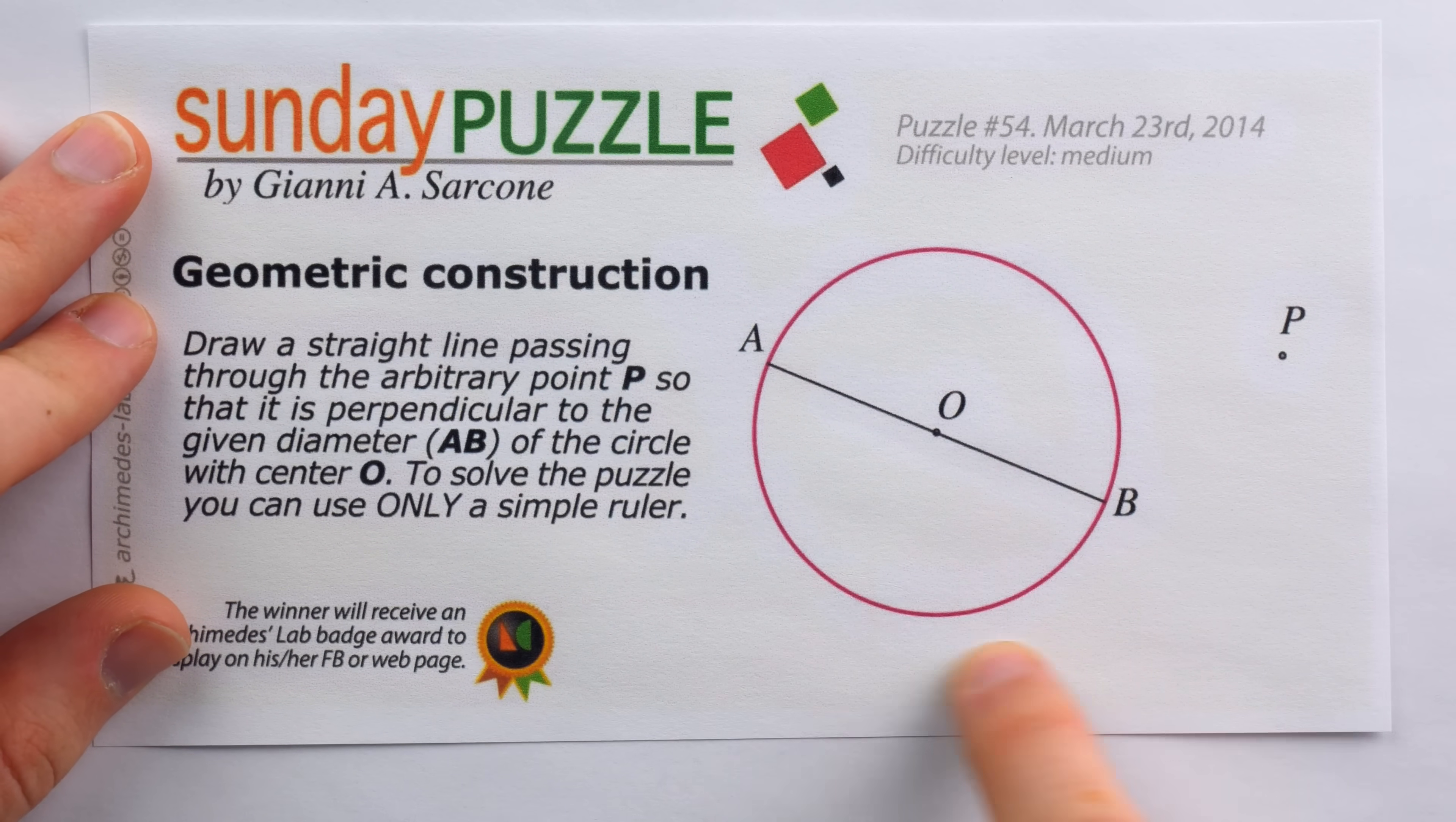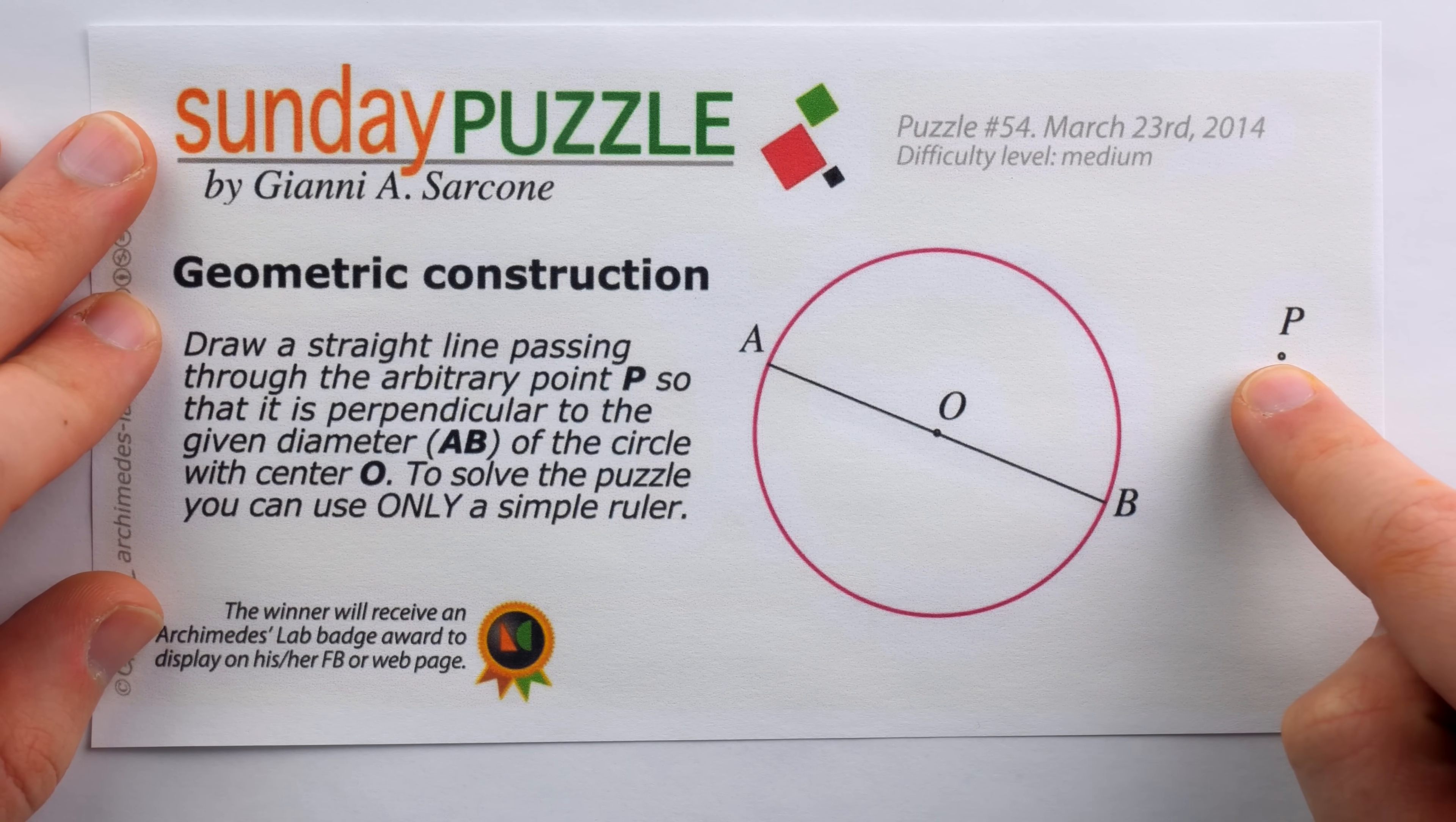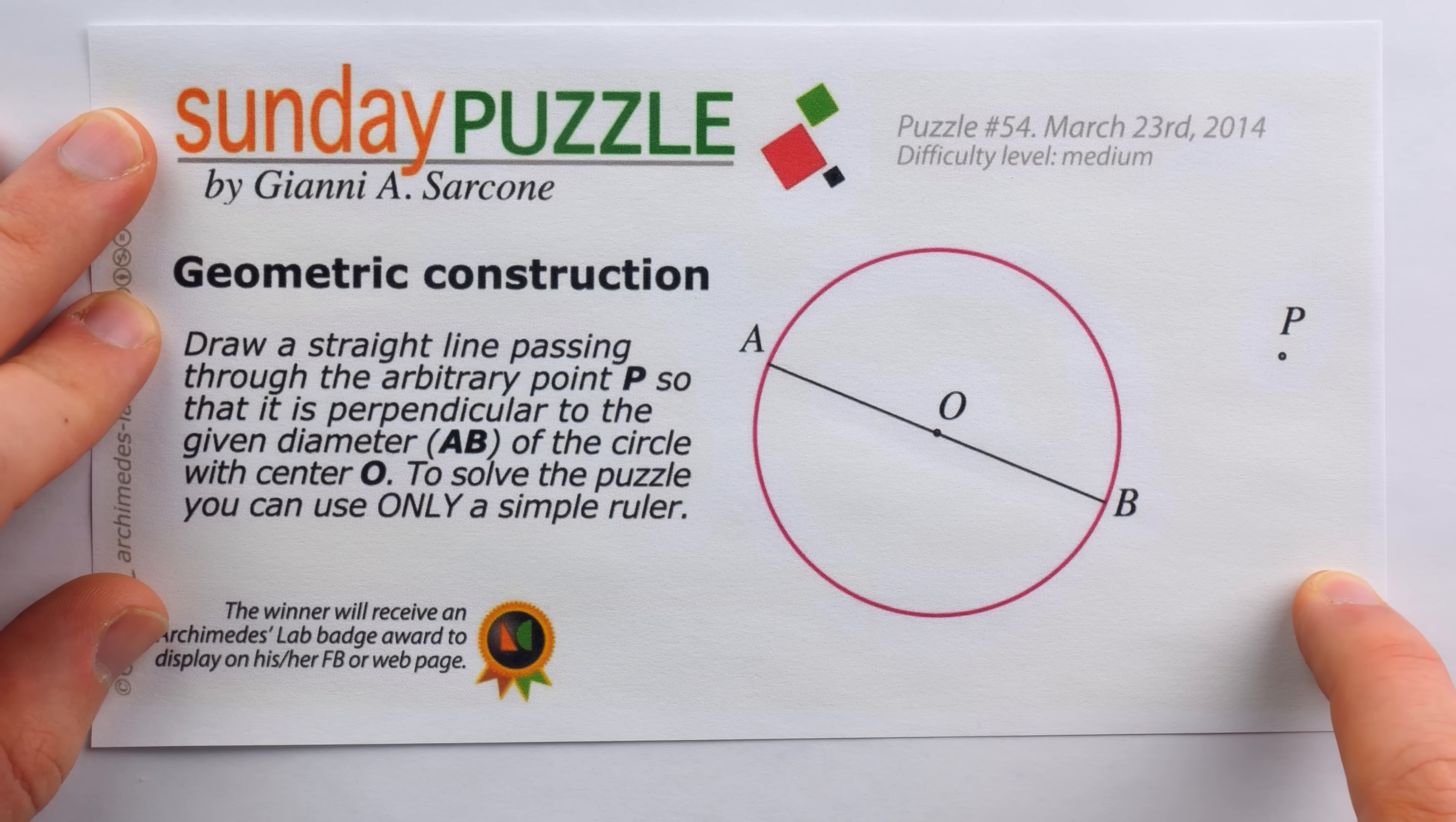The problem is this: we have a circle and a diameter AB through the center O of the circle. Consider then an arbitrary point P outside of the circle. It's our job, using only a straight edge, to construct a line through P which is perpendicular to that diameter AB.